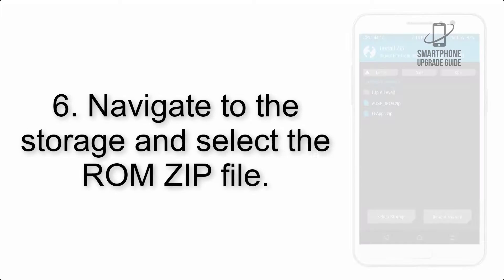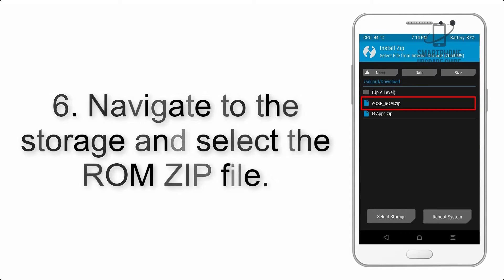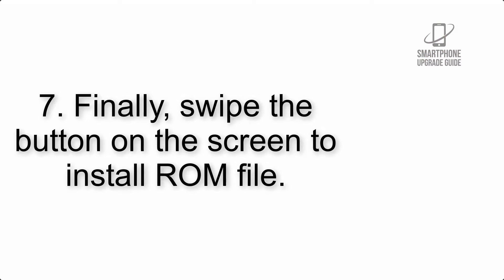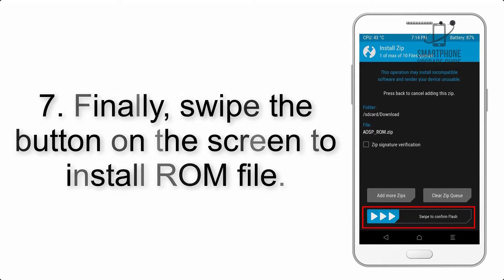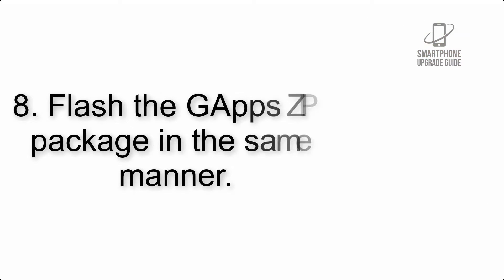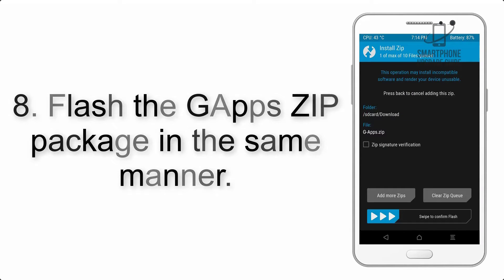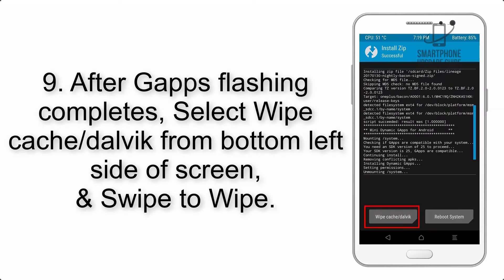Step 5: Go back to the recovery main screen and tap on the Install button. Step 6: Navigate to the storage and select the ROM zip file. Step 7: Swipe the button on the screen to install the ROM file.